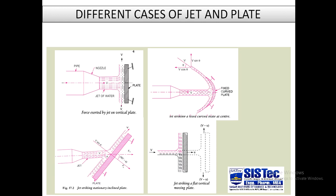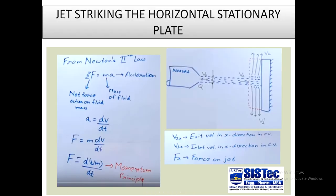These are the various cases for studying the impact of jet on the plate: case 1 — force exerted by jet on vertical stationary plate; case 2 — jet striking a stationary inclined plate; case 3 — jet striking a fixed curved plate (mostly used in turbines); case 4 — plate is moving and vertical, requiring calculation of relative velocity.